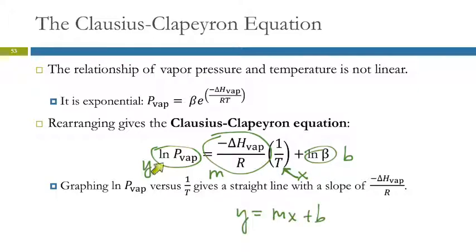If we graph the natural log of the vapor pressure versus 1 over the temperature, then we can have a slope that's minus delta H over R. R is the gas constant, and this is a constant which we usually don't care about that much. I'm not going to ask you to derive that. I just want to talk it through so you know we're not just making stuff up here.